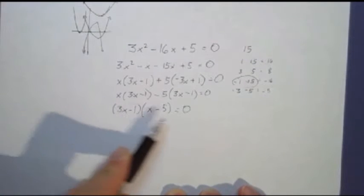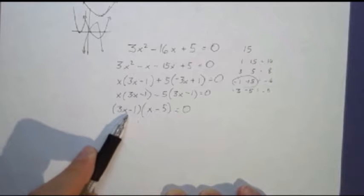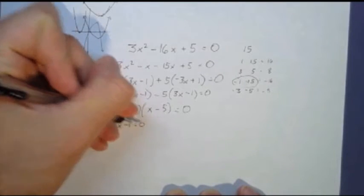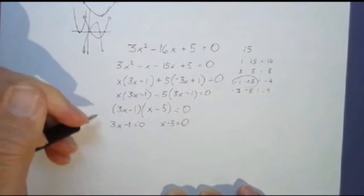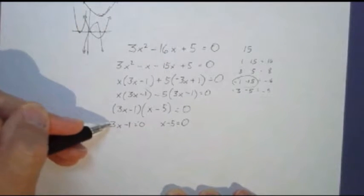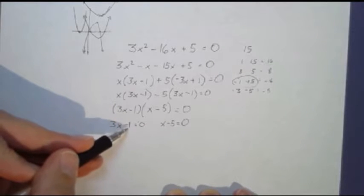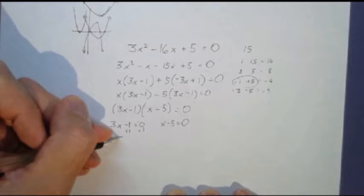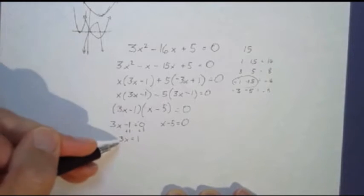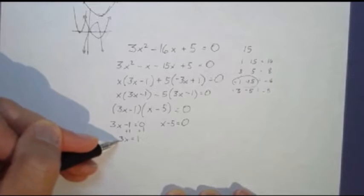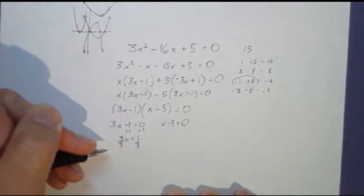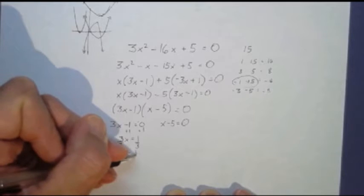From here, I set each of these factors equal to zero to find out what my roots are going to be. It's just basic algebra at this point. We get x by itself. We're subtracting one. What's the opposite of subtracting one? It's adding one. So I add one to both sides. Three x equals one. To get x by itself, I'm multiplying these two. When a number is written next to a variable, the operation is multiplication. So to undo multiplication, I divide both sides by three. Here we learn x equals one third. There's one of our roots.